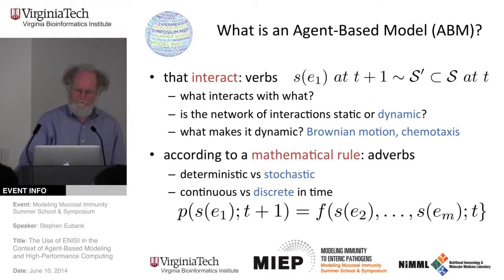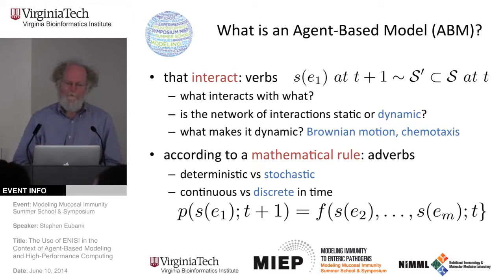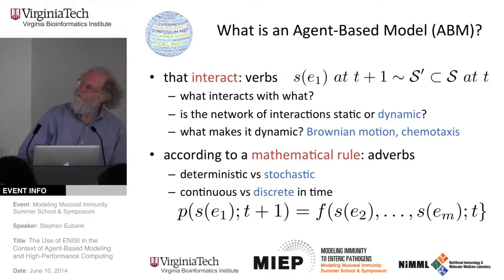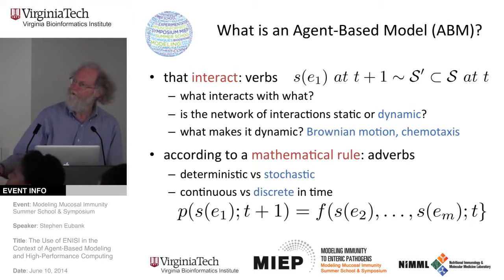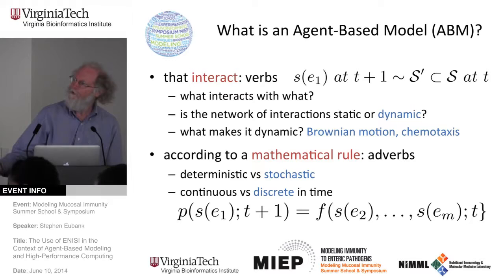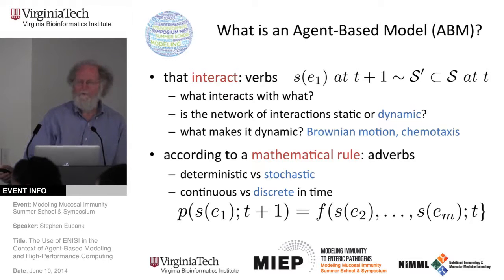Stretching the metaphor a bit, the mathematical rule is like a verb — it tells you how the things interact. Mostly I'll be talking about stochastic models, in which the rule takes the form of: given the states of all these things at time t, that determines a probability distribution of what the state of each thing is going to be at time t+1. This is a Markov process. If it were a deterministic model, this function would tell you exactly what the state at time t+1 will be. I'm also going to talk about things that are discrete in time.